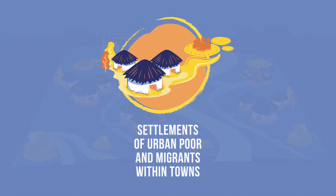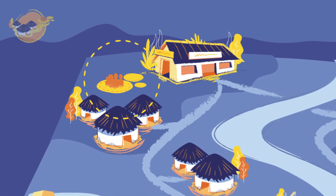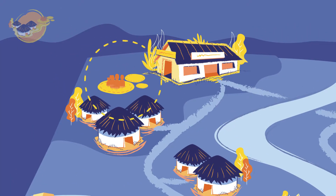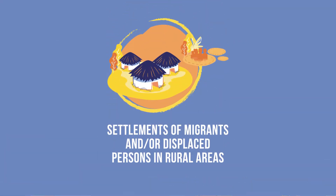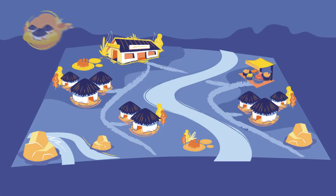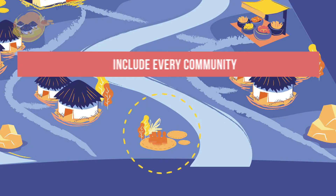Try to show the location of communities of migrant workers, urban poor, ethnic minorities, and groups in movement or unrest. You should include every community and settlement on the map, even if you do not know exactly how big they are.